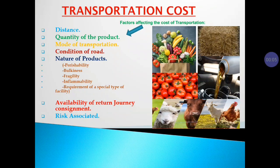Another important factor is availability of return journey consignment. For a carrier, if there are chances of a return journey consignment, the costs are going to be on the lower side. If there is no availability of return journey consignment, the costs are going to be high. Another important factor is risk associated — if the risk is high, costs are going to be on the higher side; if the journey is risk-free, the cost will be on the lower side.